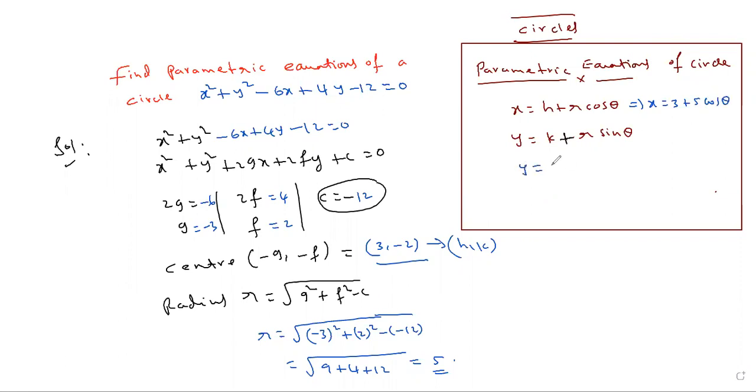y = k + r sin θ. That's the y-coordinate of the center, -2, plus r which is 5 sin θ. Write the formula and substitute.